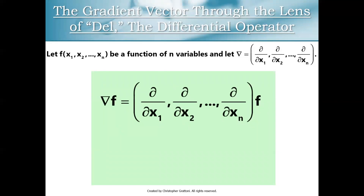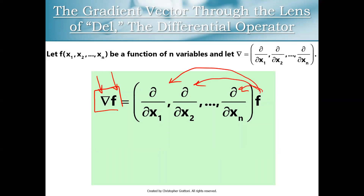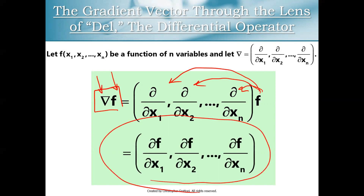Another way of looking at del f is to think of del and f as two separate mathematical objects. Remember that del is the differential operator (d/dx1, d/dx2, all the way up to d/dxn), and f is a scalar. So we can think of the gradient as a vector times a scalar. We can distribute f into this vector quantity and get the standard definition of the gradient vector. Back in lesson four, you were thinking of del f as one thing — the gradient of f. But actually, we have del and we have f as separate objects.